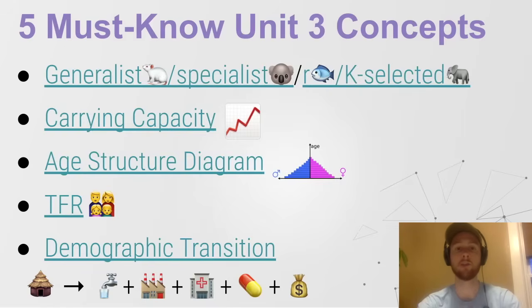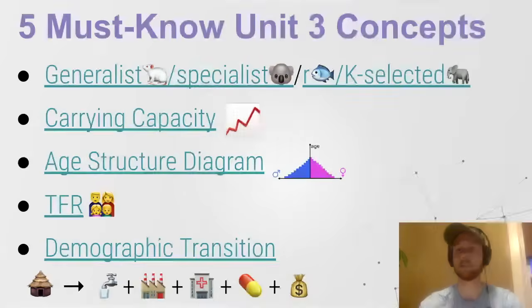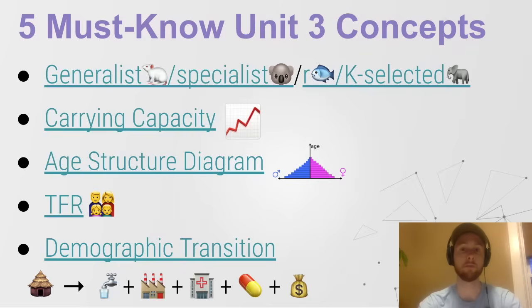On to Unit 3 — we need to know generalists and specialists. Generalists are advantaged in all sorts of ecosystems because they have really wide habitat and food needs, whereas specialists like the koala need very narrow resources and can't thrive elsewhere. R-selected species produce tons of offspring and give very little care to them. K-selected species like elephants produce only a few offspring and give them a ton of care. K-selected species are really prone to extinction, which is a major environmental problem.